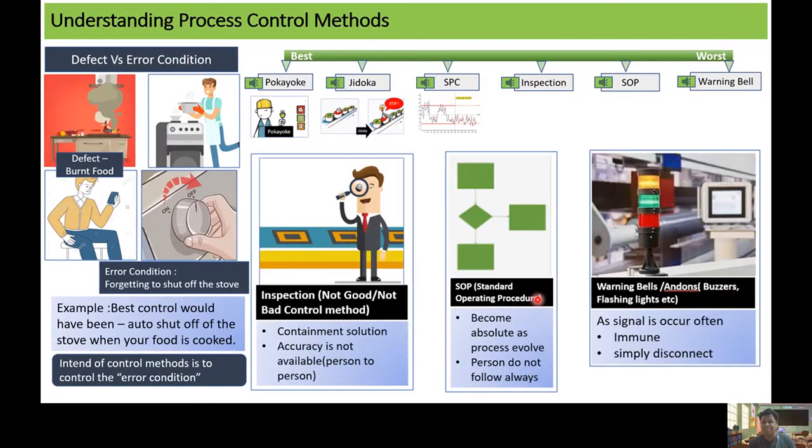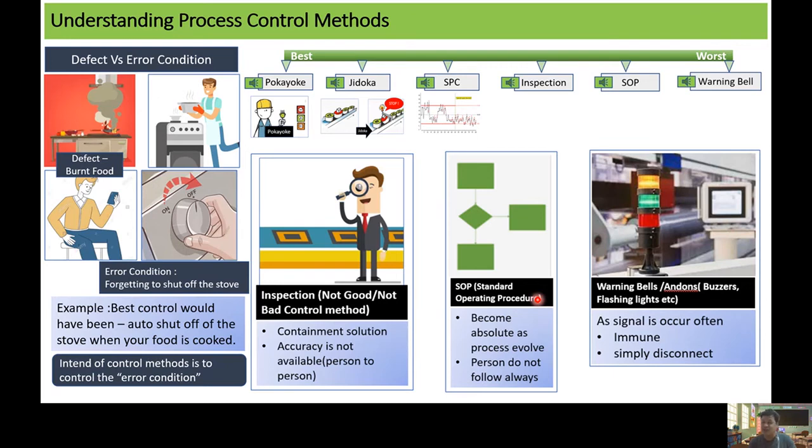The worst control method is the warning bells or the Andons in the form of buzzers and flashing lights. I can explain this with the help of alarm clocks what we use to wake up in the morning. Whether we respect the alarm clock or we don't respect the alarm clock highly depends on the behavior of ourselves. Similarly, in a manufacturing process, whether we respect the warning bell or the Andons highly depends on the discipline or the human behavior of the people working in the manufacturing process.